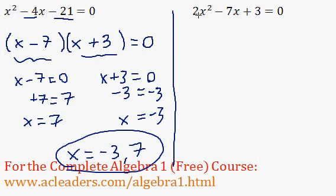Over on this side, 2x squared minus 7x plus 3 equals 0. We're looking for two numbers that multiply to whatever these two multiply to, which is positive 6, and two numbers that add up to negative 7. Those numbers will be negative 6 and negative 1.